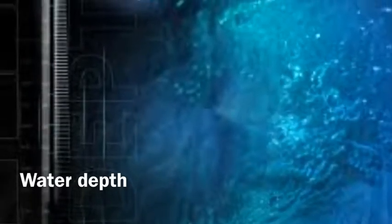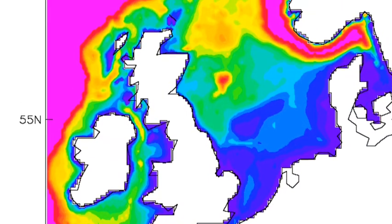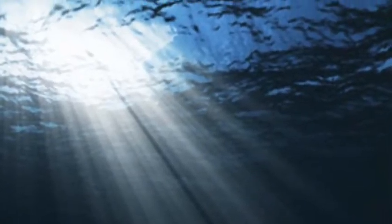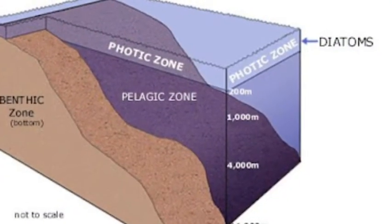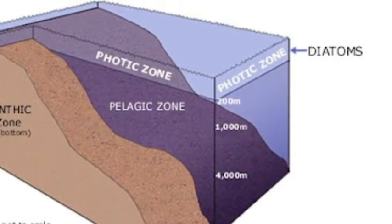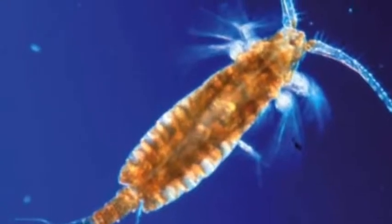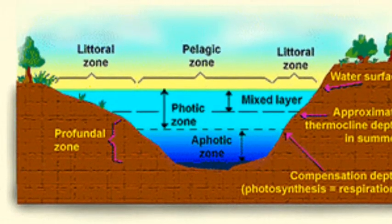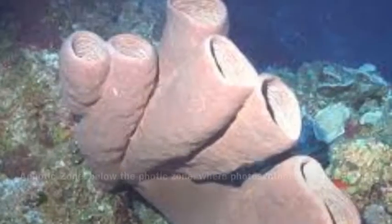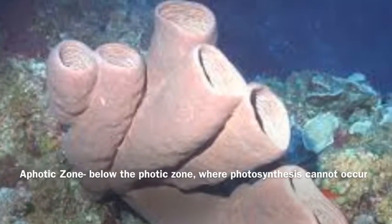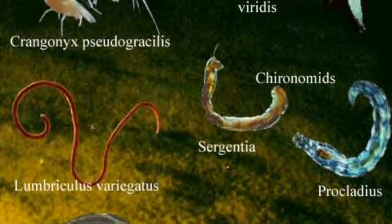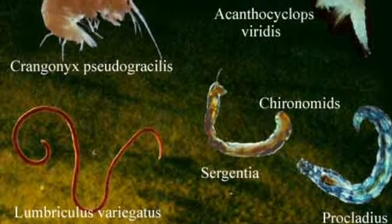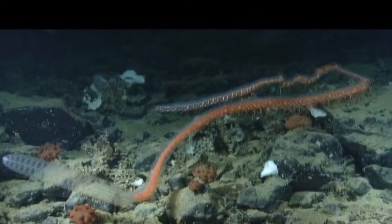Water depth strongly influences aquatic life because sunlight penetrates only a relatively short distance through water. Benthos are aquatic organisms that live on or in rocks and sediments on the bottom of lakes, streams, and oceans.